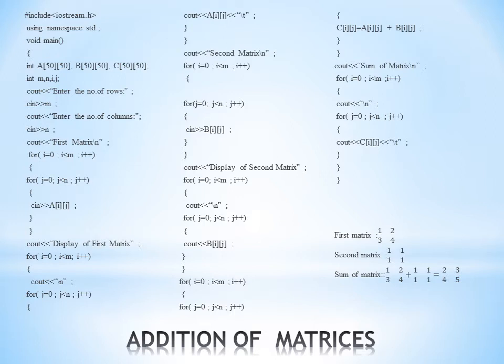In the same way we enter the values in the second matrix, array B, and display it as well. We display each matrix in matrix format. The tab character \t is used for horizontal spacing — it is an escape character which cannot be directly typed from the keyboard. To add two matrices, their number of rows and columns must match, so both matrices here have two rows and two columns.